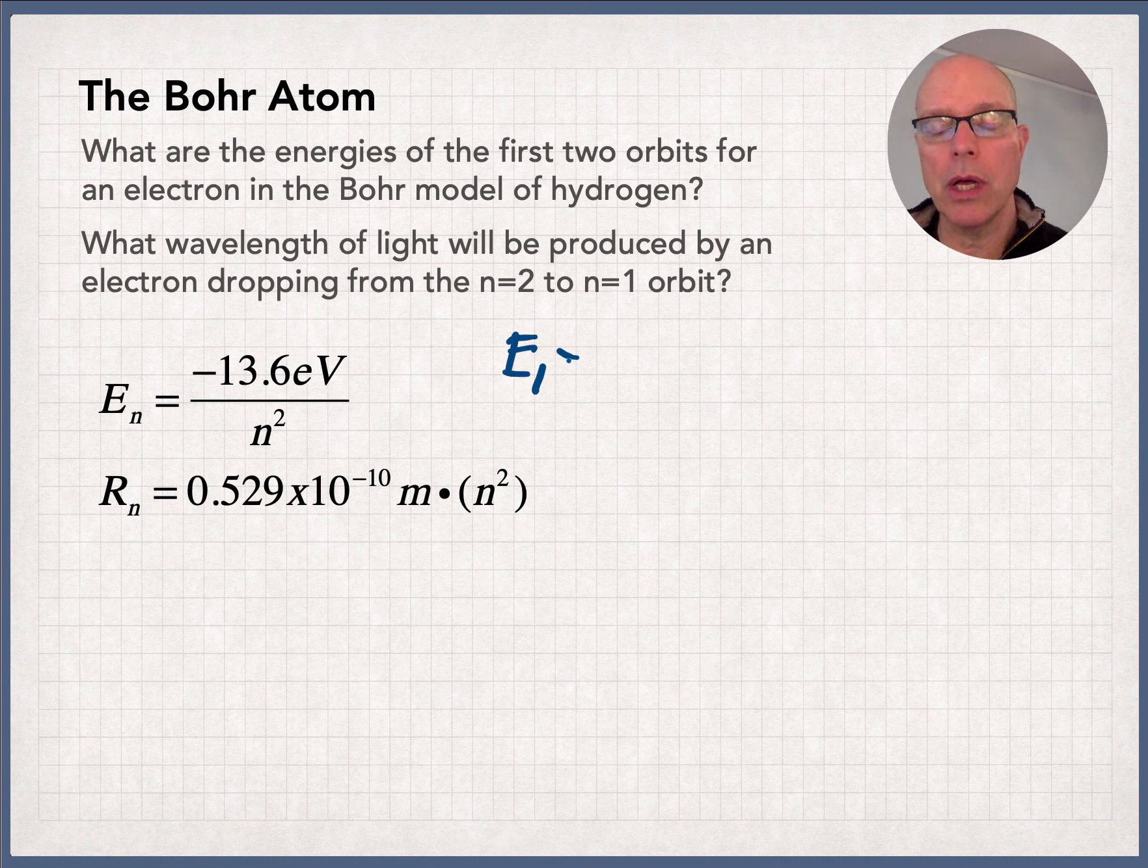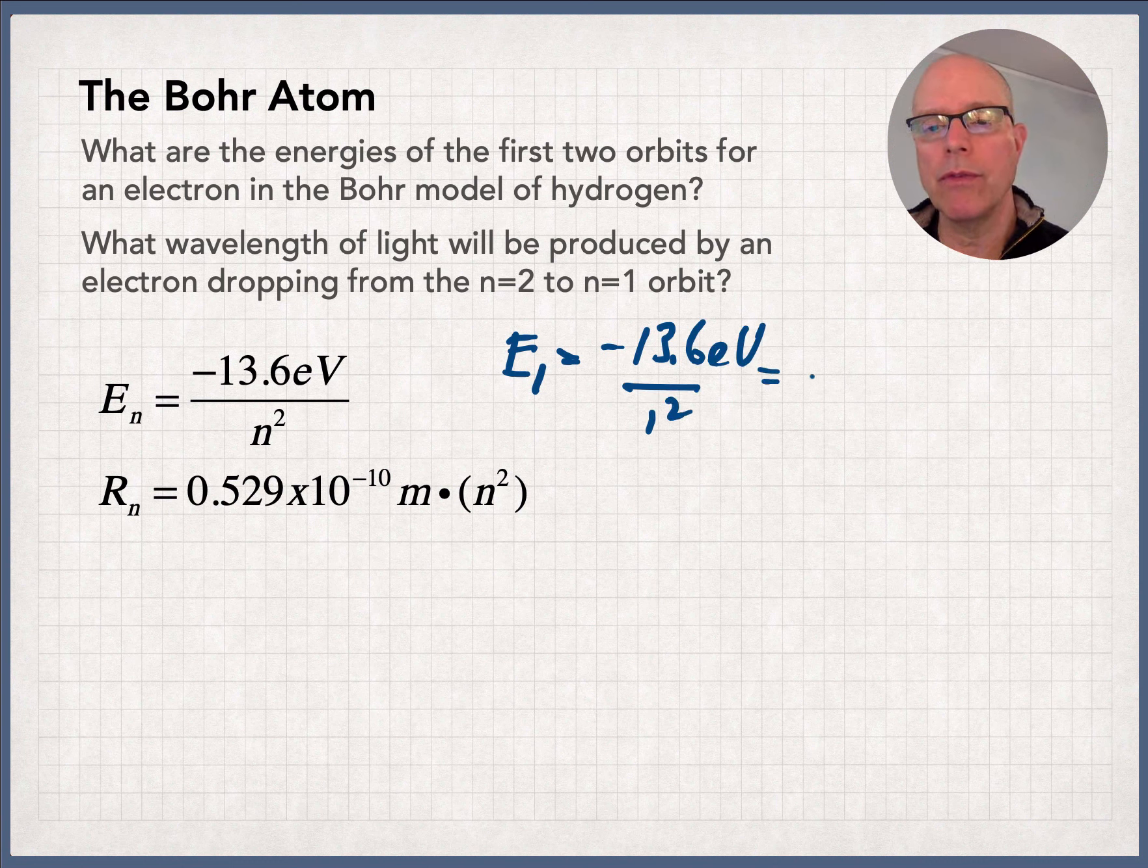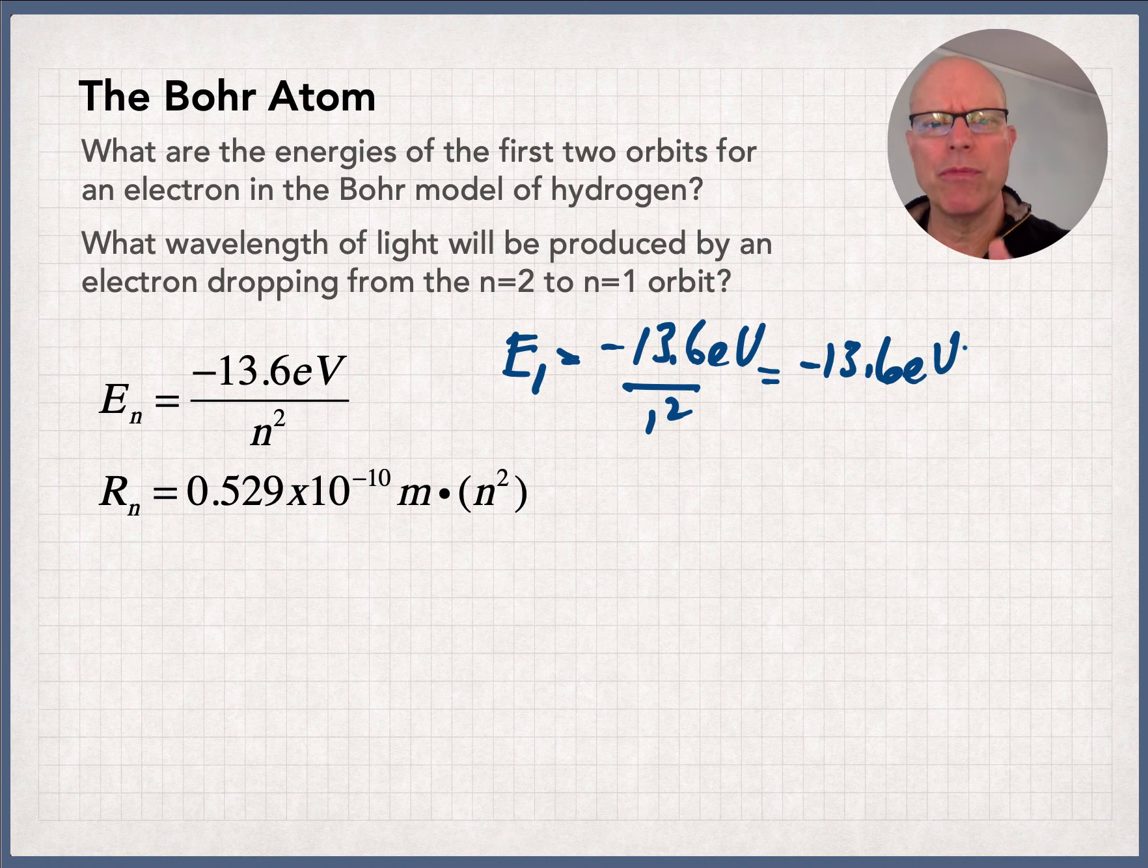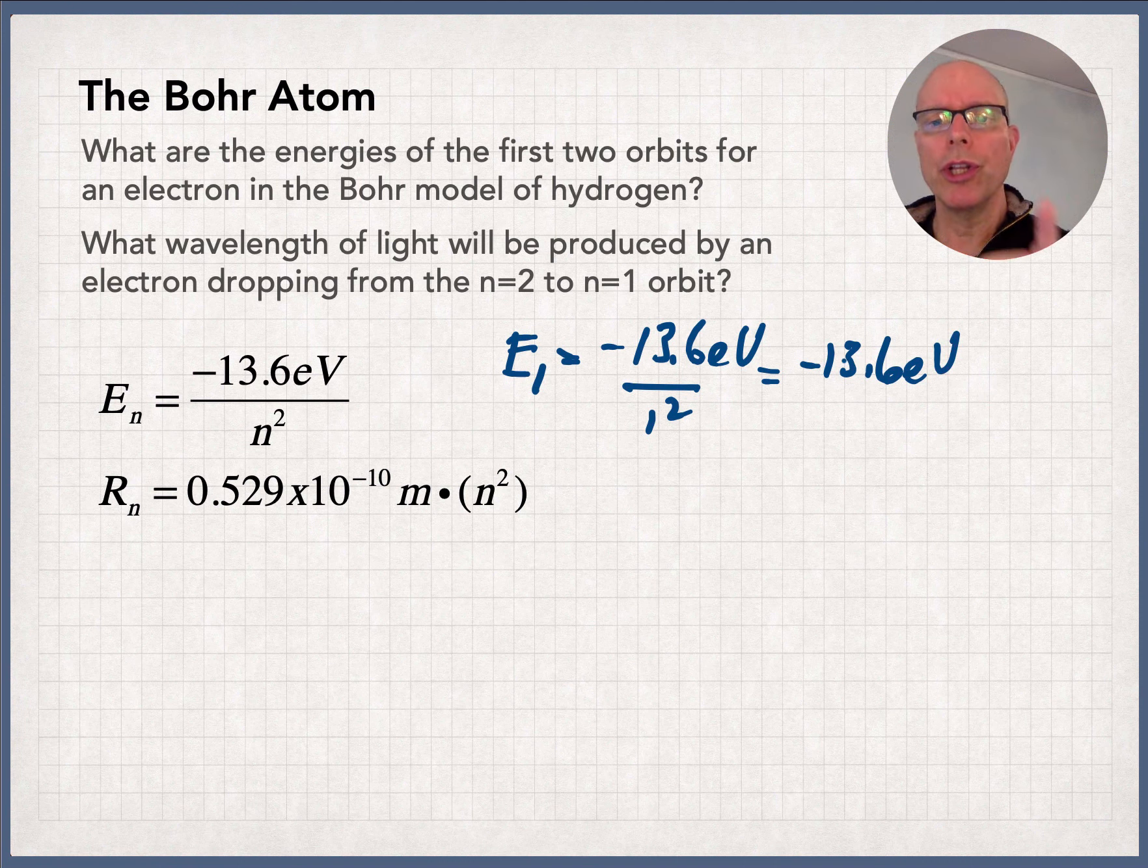To get n equals 1 and get the energy of that state, this is simplicity itself, negative 13.6 over 1 squared gives you negative 13.6 eV. If you're thinking about this from a photoelectric effect standpoint, and I hope you are, you should say, wow, that electron is really stuck.